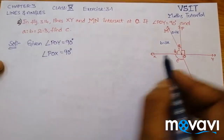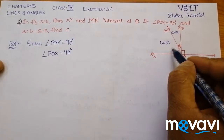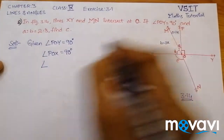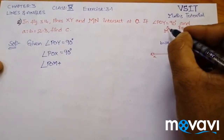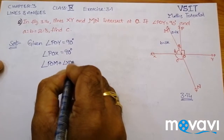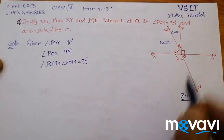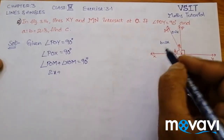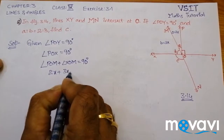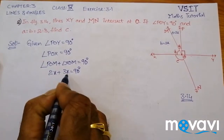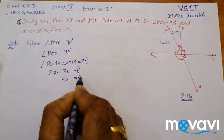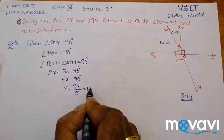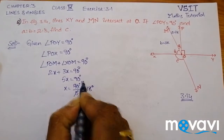Since angle POX equals 90 degrees, this angle plus this angle equals 90 degrees. So angle POM plus angle XOM equals 90 degrees. Substituting, 2X plus 3X equals 90 degrees, giving 5X equals 90 degrees, so X equals 90 divided by 5, which is 18 degrees.